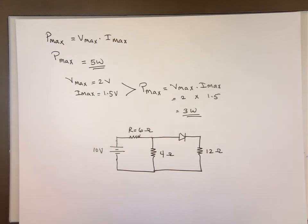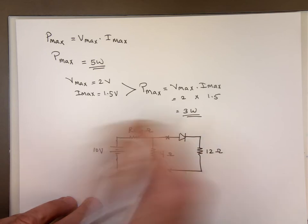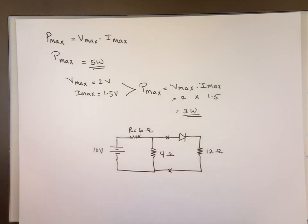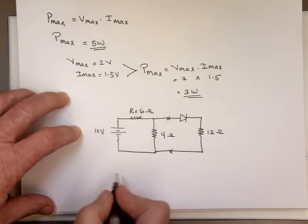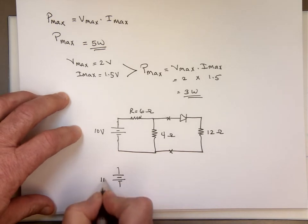So what you have to do is thevenize the circuit, cut it right there, and replace the circuit with V thevenin, the equivalent value. So in case you forgot, two or three videos ago, we thevenized something like this.